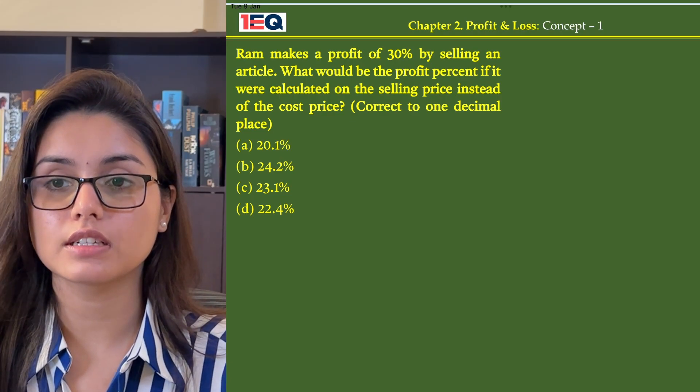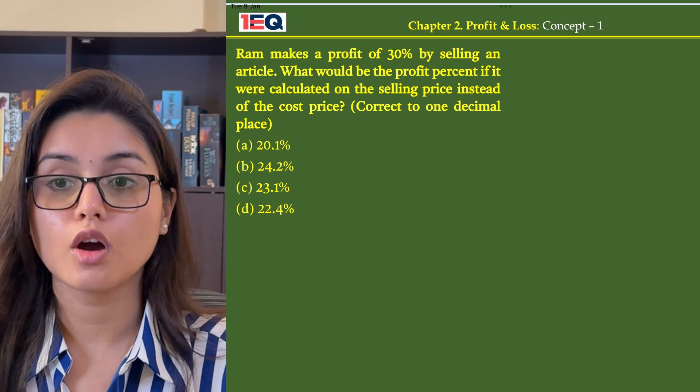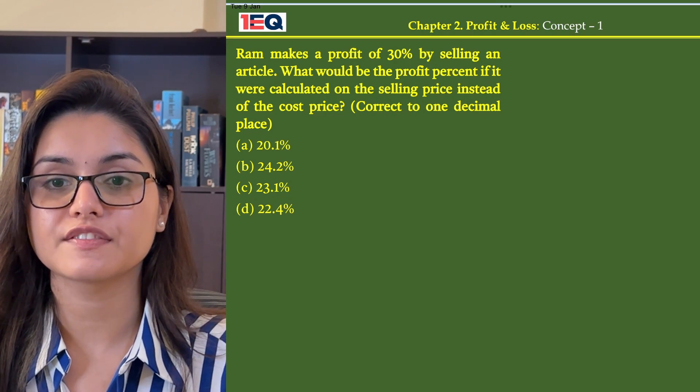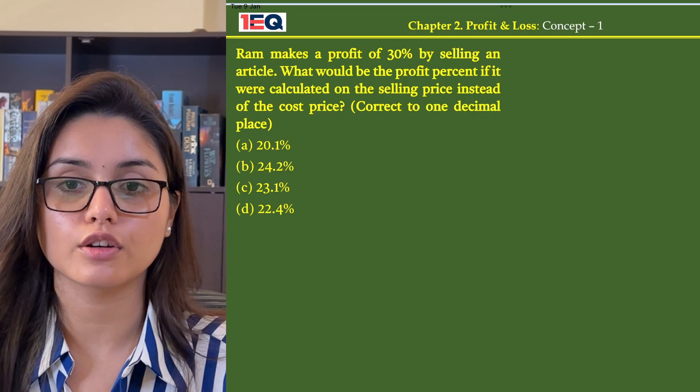Ram makes a profit of 30% by selling an article. What would be the profit percent if it were calculated on the selling price instead of the cost price?